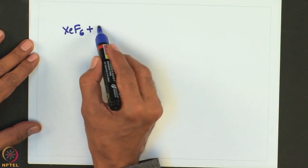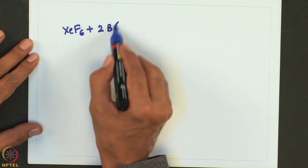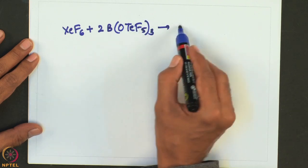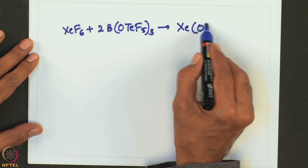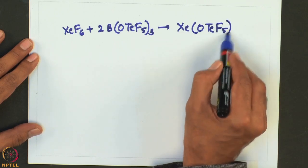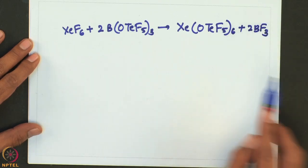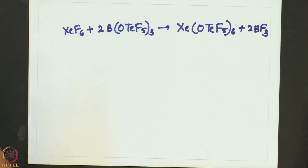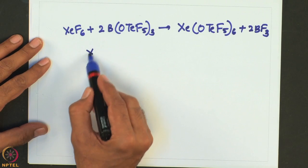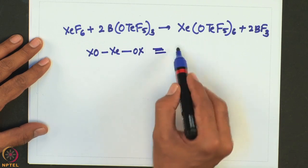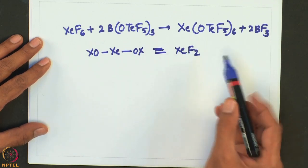For example, XeF6 + 3 B(OTeF5)3 gives Xe(OTeF5)6 plus 2 BF3. The compounds have similar shapes to the fluorides; for example, XeOX is very similar to XeF2 and has linear geometry.